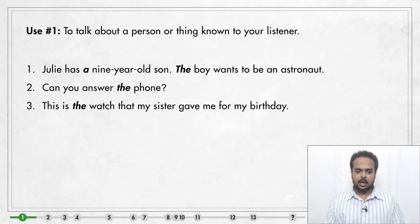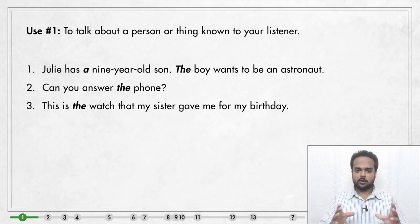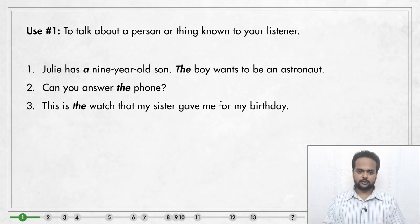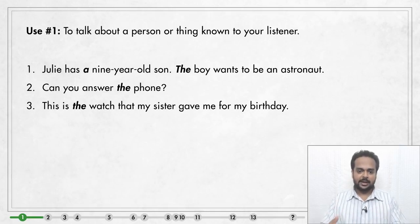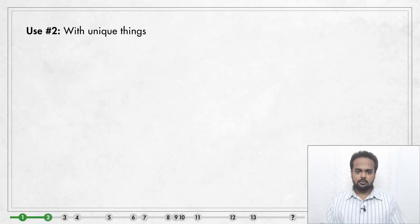Here's another example: 'This is the watch that my sister gave me for my birthday.' This is a little different — if I just say 'this is the watch,' you'd be confused, but once I give you more information — 'the watch that my sister gave me for my birthday' — it becomes known to you.